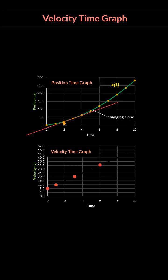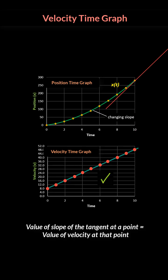And so once we plot all the possible slopes along this curve, what we get is the velocity-time graph. And this graph shows that you have a certain velocity at time t equal to 0 and the velocity is increasing in a linear fashion.